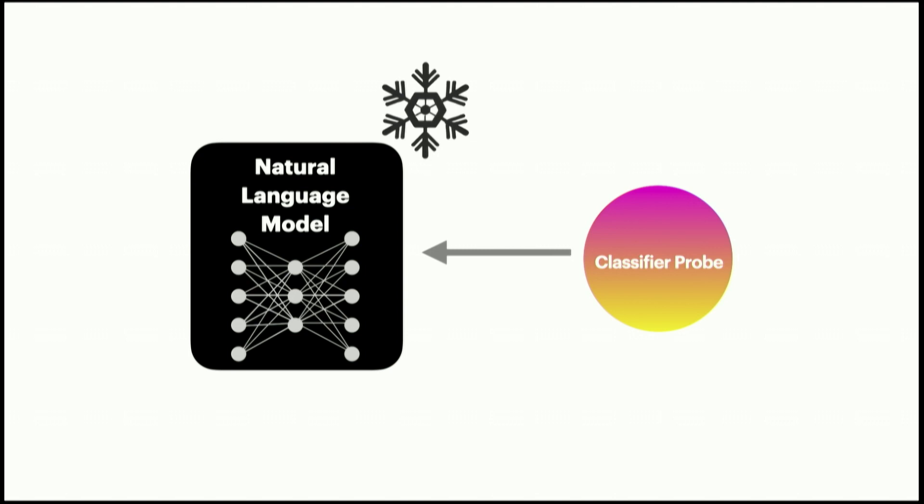The idea behind probing is: you have these internal representations, and we can learn what they are related to — we can classify them. If there's something meaningful, we expect the probe classifier to have high accuracy because there's a semantically meaningful expectation, and this lends itself towards the thing that we expect.